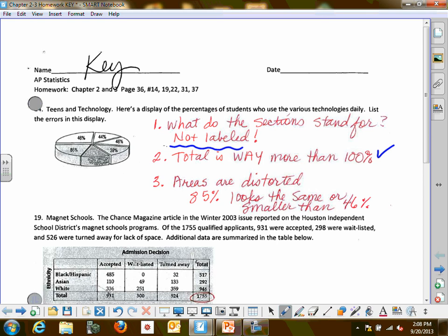I did have that the areas are distorted because in my mind this little 85% piece looks as big, if not smaller, than this 46% behind it. Because of this, the area principle is being violated. Somebody told me this is 46% and this is 46%, so those two 46% amounts should technically be the same, but they're not.